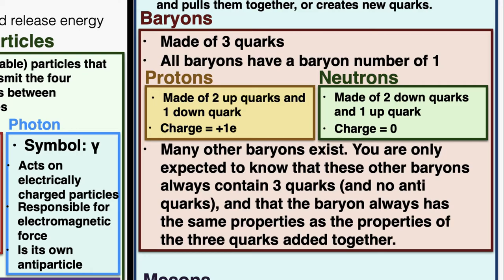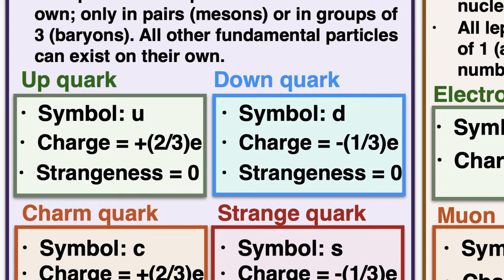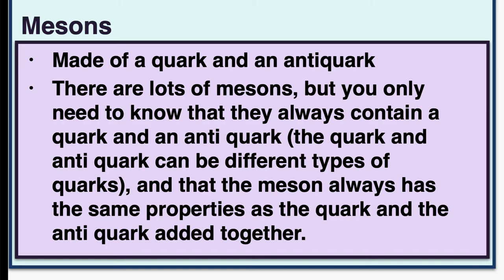To verify: a proton is made of two up quarks and one down quark. The up quark has a charge of +2/3 and the down quark has a charge of −1/3. Adding two up quarks and one down quark: 2/3 + 2/3 − 1/3 = 3/3 = +1, which is the correct charge of a proton. Hadrons have the same properties as the quarks that make them up. The other type of hadron is mesons, made of a quark and an antiquark of potentially different types, with properties equal to those two added together.